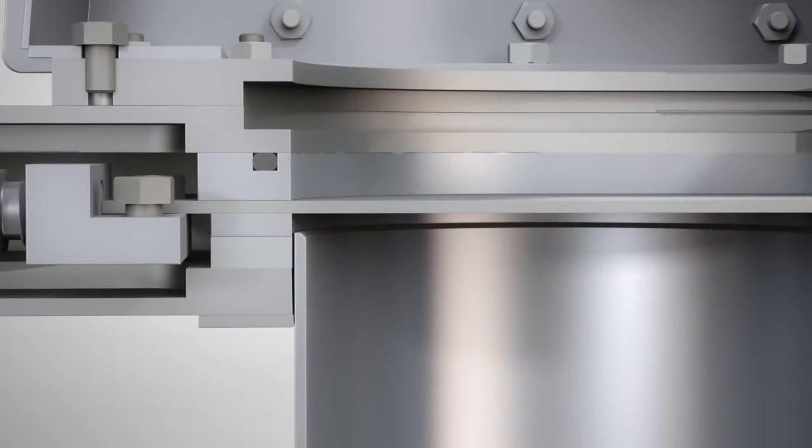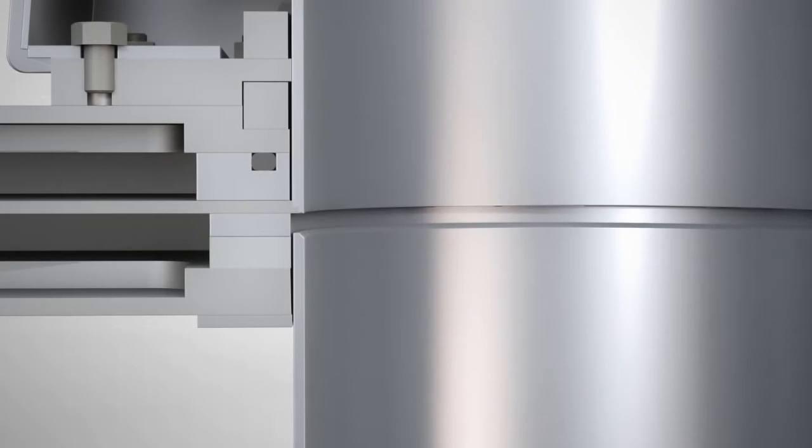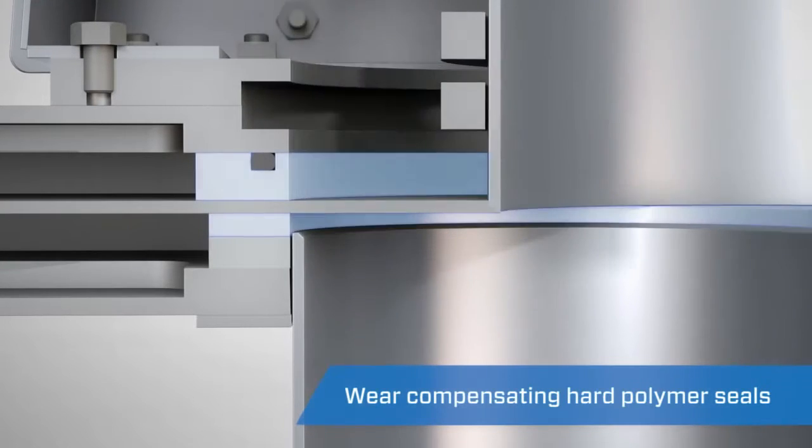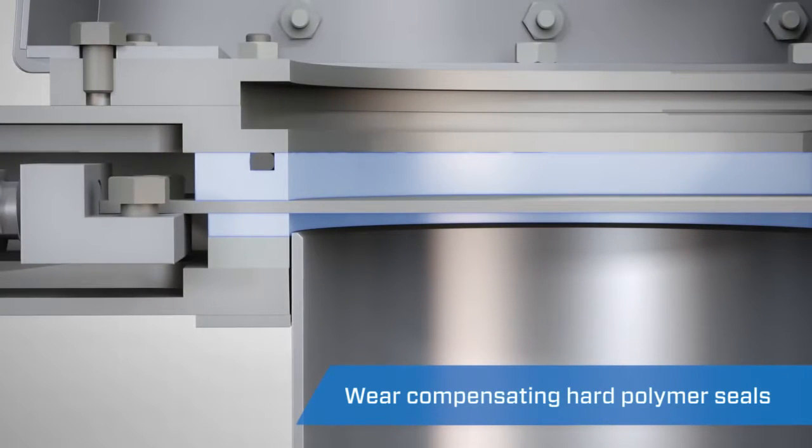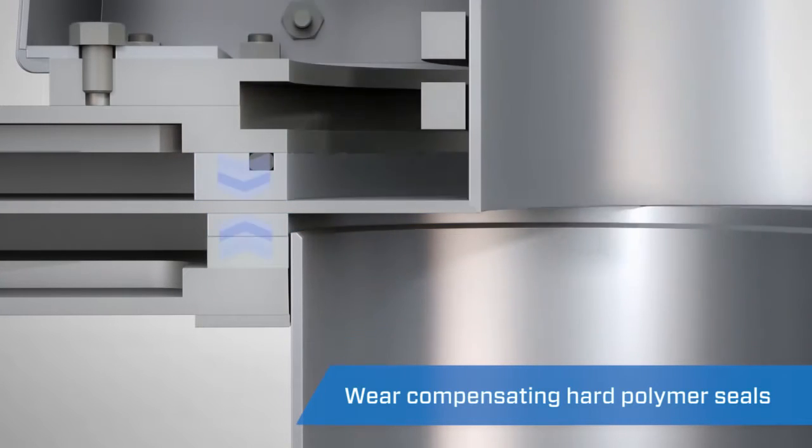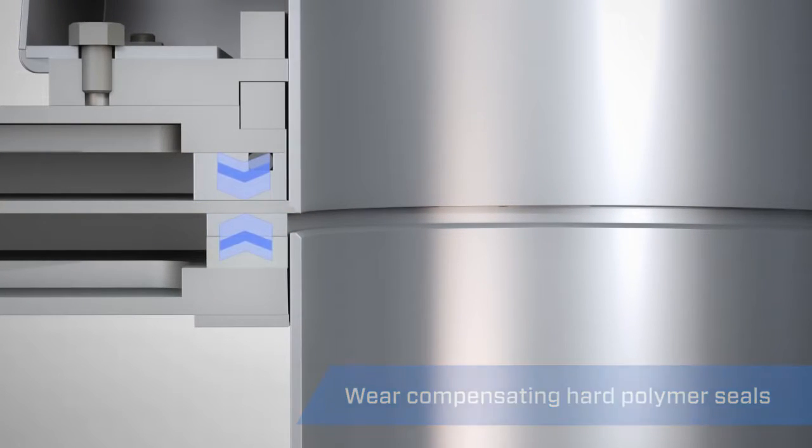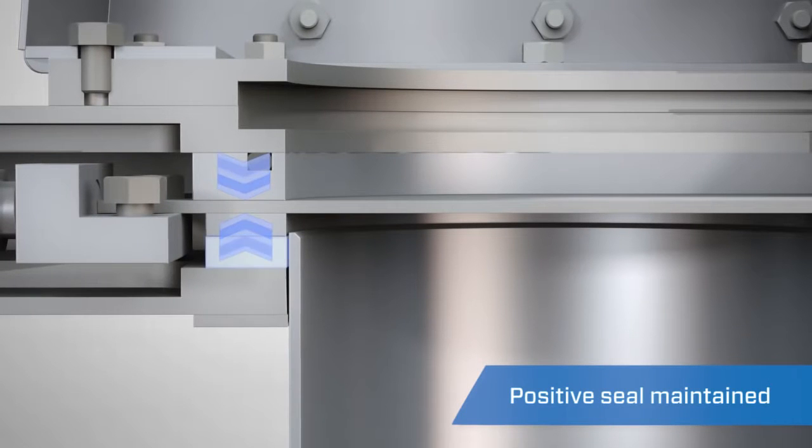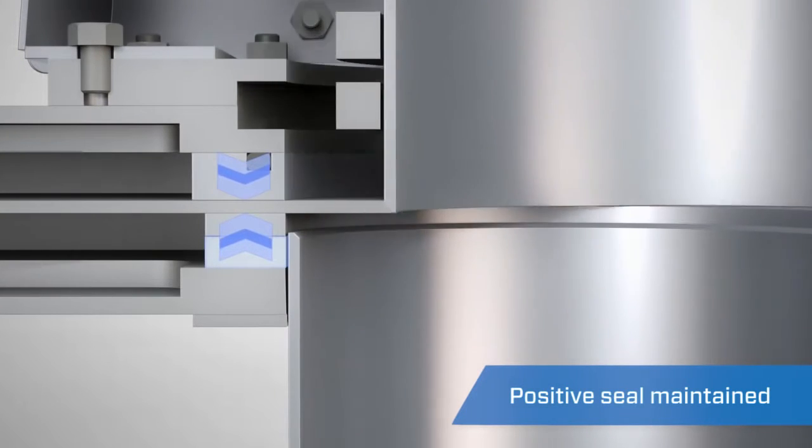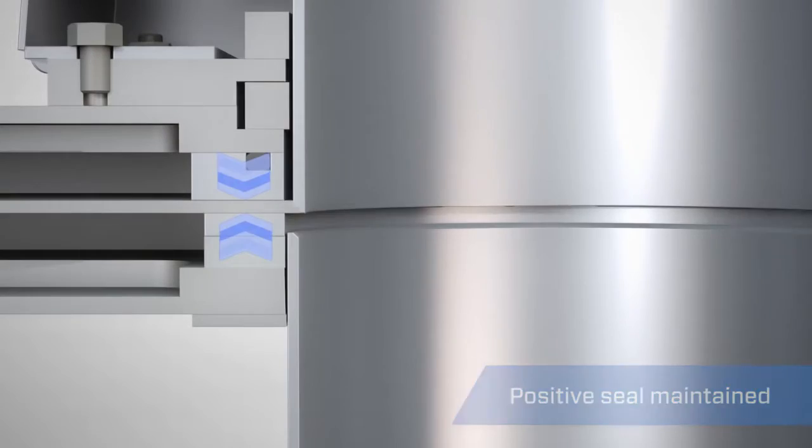Unlike inline flap diverters, the Vortex FlexTube Diverter utilizes hard polymer seals that are shielded from the material flow. These wear-compensating hard polymer seals are continuously forced together by a compressed rubber backing, maintaining a positive seal even as the polymer slowly wears over time.